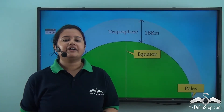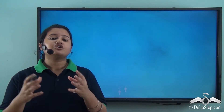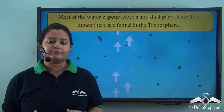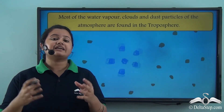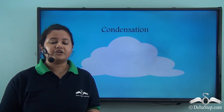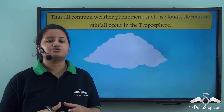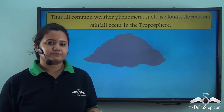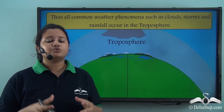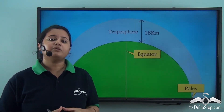All kinds of weather changes take place in the troposphere because it contains water vapour, dust particles, and other impurities in high percentage. The water vapour condenses around dust particles, leading to the formation of clouds. These clouds eventually become heavier and lead to rainfall or precipitation, making fresh water available on earth.